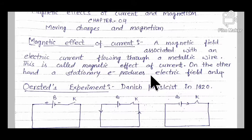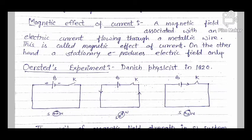यह magnetic effect of electric current कहलाता है। लेकिन जब कोई भी electron stationary है — यानि stable है, move नहीं कर रहा — तो उस condition में केवल electric field produce होगा।